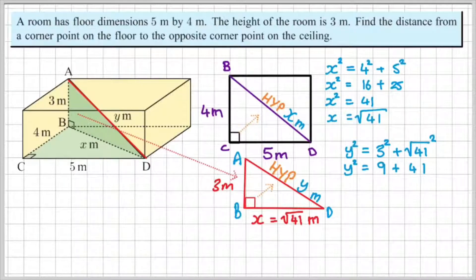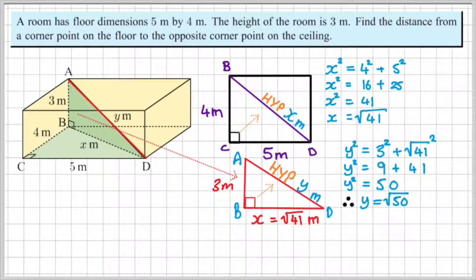And if I simplify this, y squared is equal to 9 plus 41. And then y squared is equal to 50. So therefore, y is equal to the square root of 50, given that y is greater than 0.